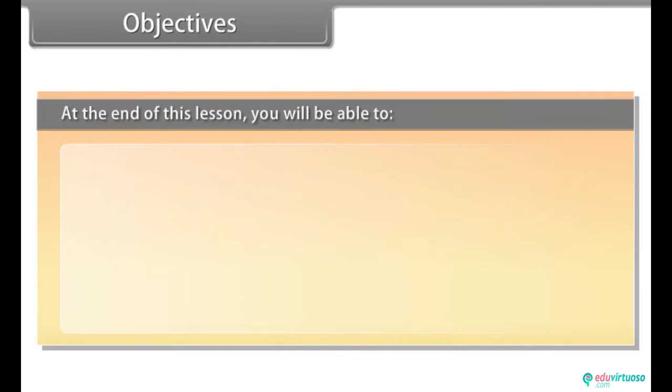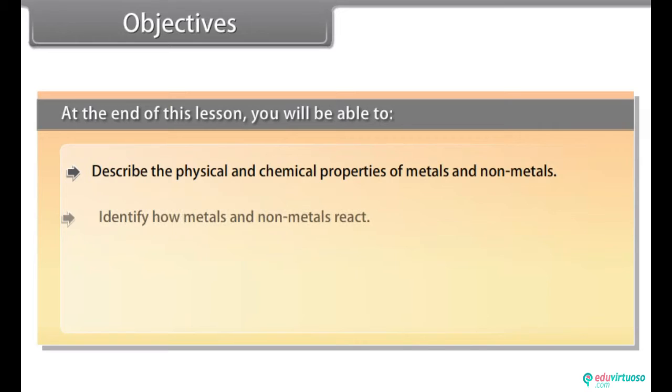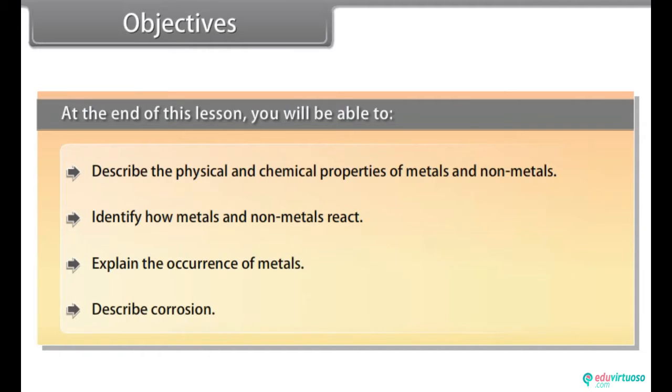Objectives. At the end of this lesson you will be able to describe the physical and chemical properties of metals and non-metals, identify how metals and non-metals react, explain the occurrence of metals, and describe corrosion.